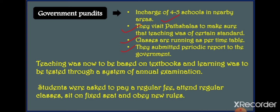Not every pundit or guru accepted British administration. Some of them said they would run their patshalas independently. Some willingly accepted. The Britishers then said that only those schools that accepted their administration would receive funding. That means gurus and pundits running their schools independently without British oversight were not provided with funds.